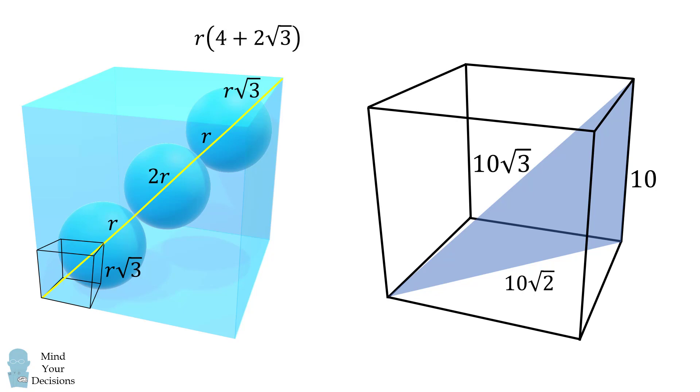The entire distance will be equal to r multiplied by the quantity 4 plus 2 times the square root of 3. And this is equal to 10 times the square root of 3.